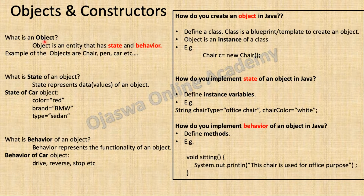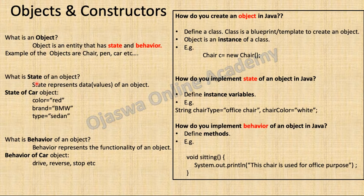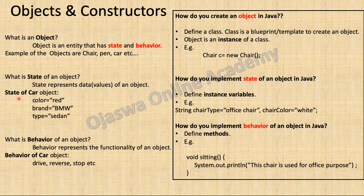What is an object? An object is an entity that has state and behavior. For example, a chair, car, etc. What do you mean by state of an object? State represents the data or value of an object. For example, a car object. The state of a car object is its color, brand, type, etc. All the fields that represent data related to the object are known as the state of an object.